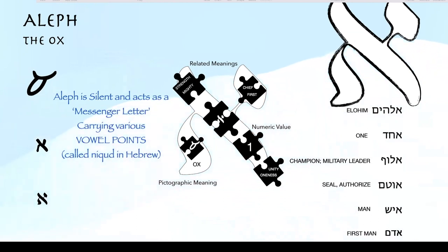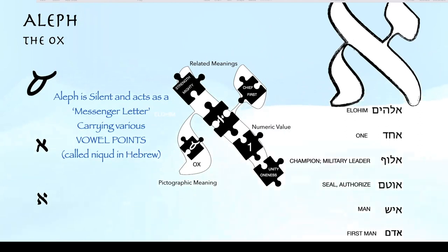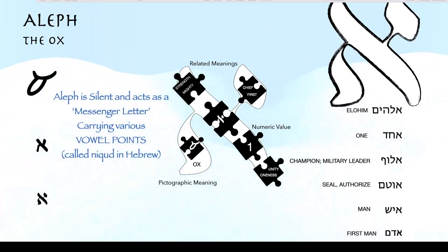I put together this little image so you can see the square script in the center, the pictographic meaning on one side, and these different related meanings — strength. Aleph is also the number echad — it's the number one in Hebrew, it has the numeric value of one. By connotation it also has the meaning of unity and oneness. Of course it's the first letter in the word echad, which means one and also means unity — talking about the man and the woman becoming one flesh. It also has the connotation of chief and first. Because of that relationship to the ox, it carries that idea of strength and mightiness, which relates back to this idea of being first. It's the first letter in the title Elohim.